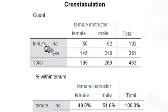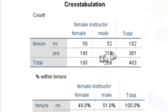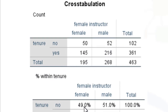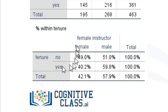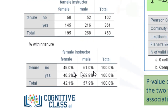So we do the tabulations. In the rows we have tenured no versus tenured yes, and female and male instructor counts are shown. We can eyeball these numbers or turn them into percentages, and SPSS readily produces percentages. We notice that 49% of non-tenured instructors are female versus 51% who are male. But for tenured instructors, 40% were female and 59.8% were male. So within the tenured group, we see a greater proportion of males, while in the non-tenured group the distribution between males and females looks similar.